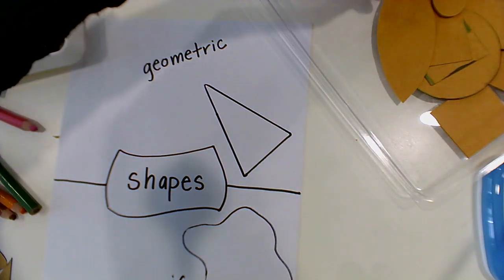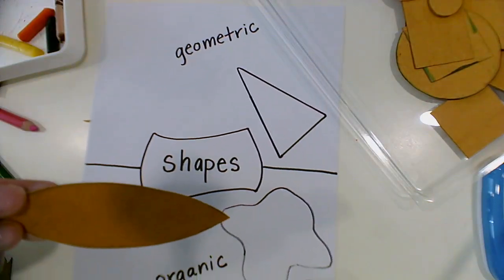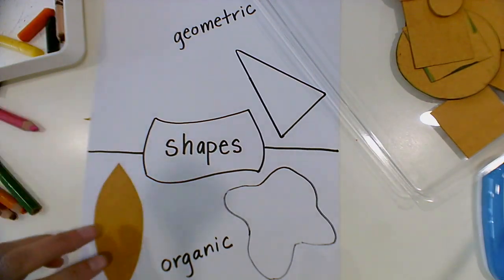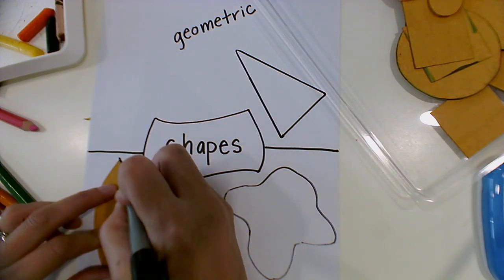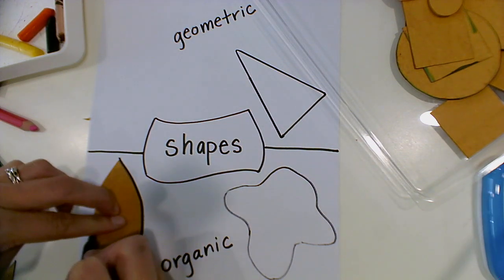Other shapes like this leaf shape, that is organic. So I will draw that on the organic part of the paper.